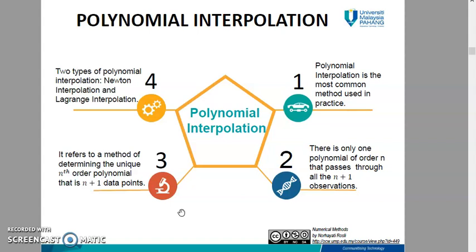For this polynomial interpolation, there is only one polynomial of order N that passes through all the N plus 1 observations. Meaning that, polynomial of order N should have N plus 1 data points connected to it.